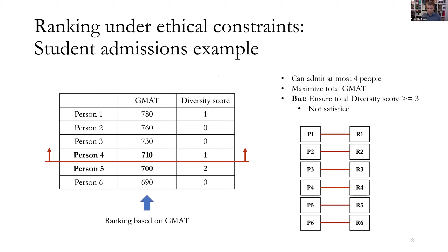Our work deals with issues and decision problems which can be cast in the framework of ranking. To give a very simple example, it's the admission problem. Consider a business school that would like to admit students — for simplicity, consider that it received just six applications and it can only admit four people. The top objective here is to maximize GMAT score — to maximize the average or total GMAT score across the admits.